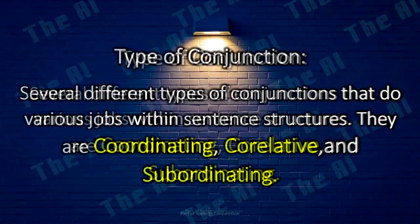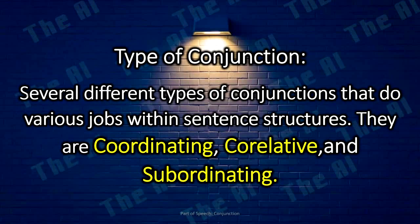The types of conjunction. There are several different types of conjunctions that do various jobs within sentence structures. They are: coordinating, correlative, and subordinating conjunction.